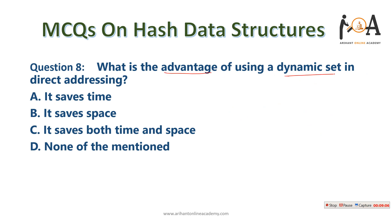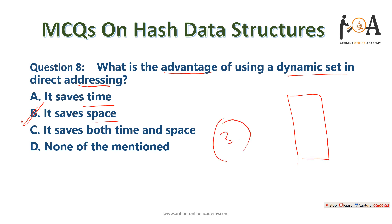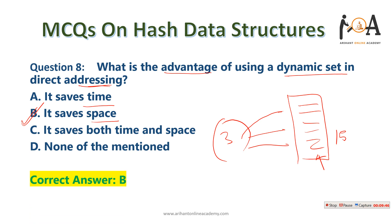What is the advantage of using a dynamic set in direct addressing? It saves space. For example, if you only have three values and your hash table has 15 spaces, after filling those three keys you can dynamically resize the hash table to size 3, freeing the remaining memory. So option B — saves space — is the correct answer.